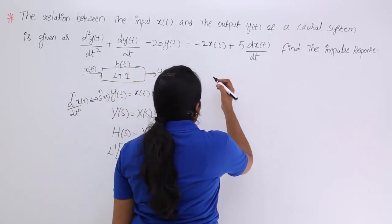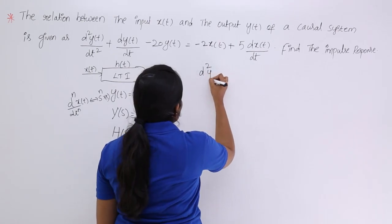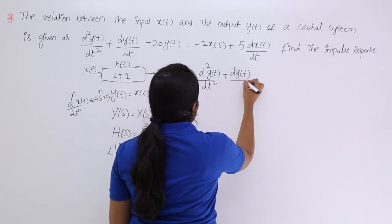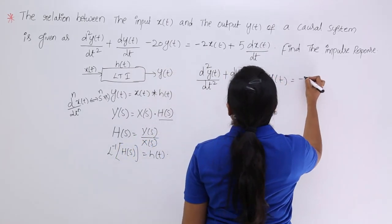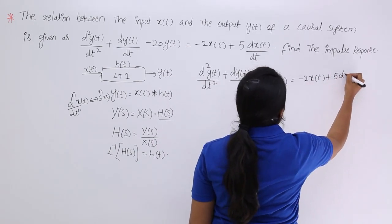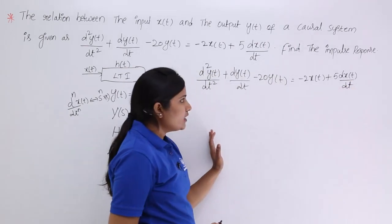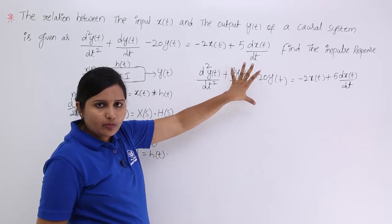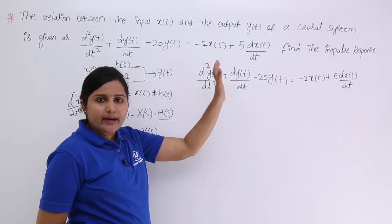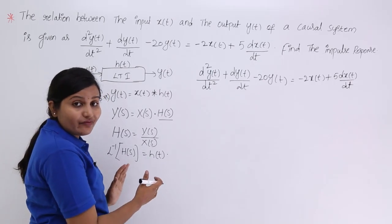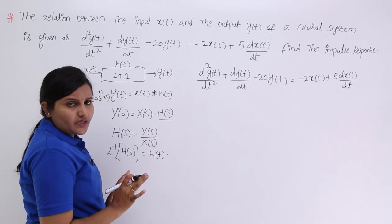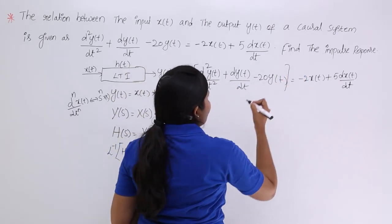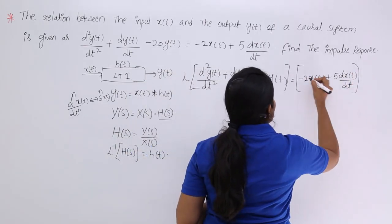Now I am going to take the differential equation as it is: d²y(t)/dt² + dy(t)/dt − 20y(t) = −2x(t) + 5·dx(t)/dt. I want to propagate and solve this problem in the frequency domain. The problem is given in the time domain, so we convert it by taking the Laplace transform of both sides.